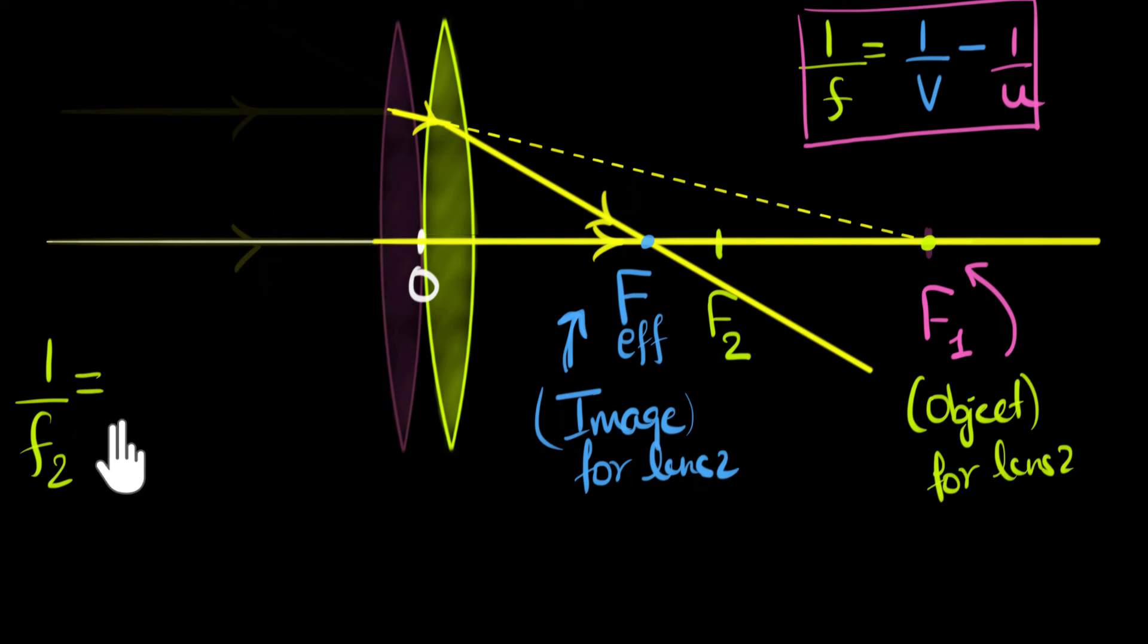That's going to be equal to 1 over the image distance. The image is this, and so the image distance itself is the effective focal length. So 1 over F effective minus 1 over the object distance. And the object distance is this point, which is the focal length of the first lens. So that's F1, 1 over F1. And we have connected them.